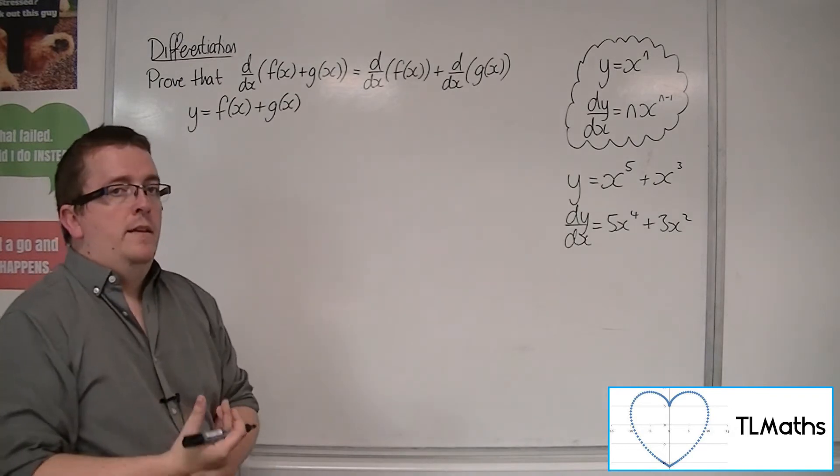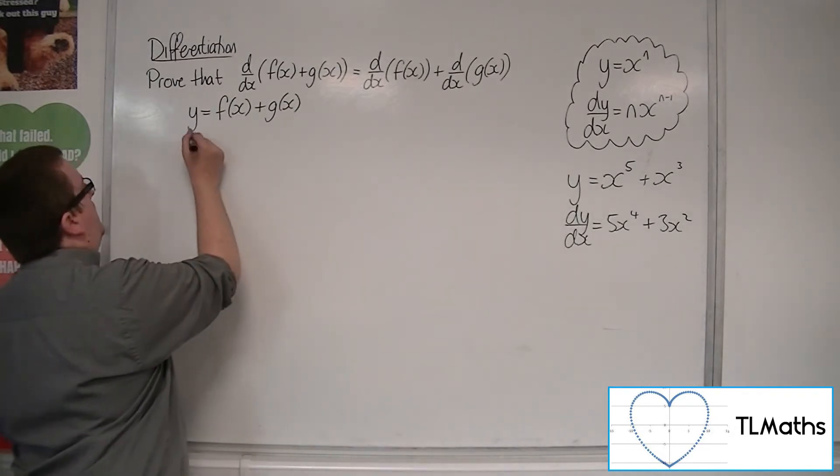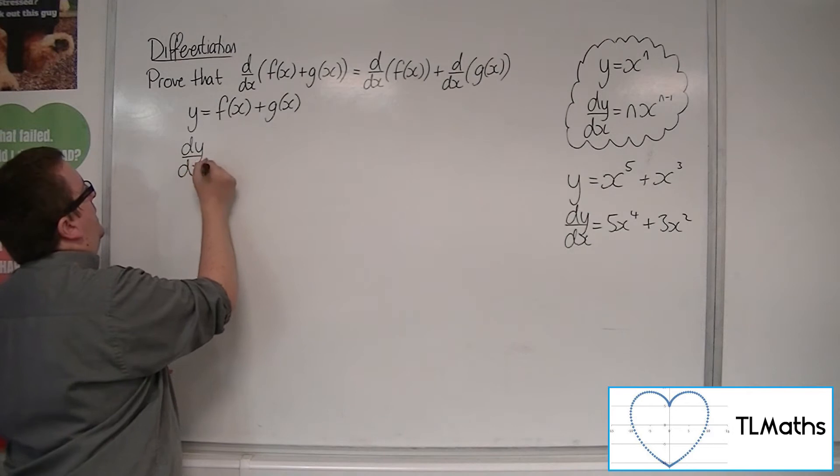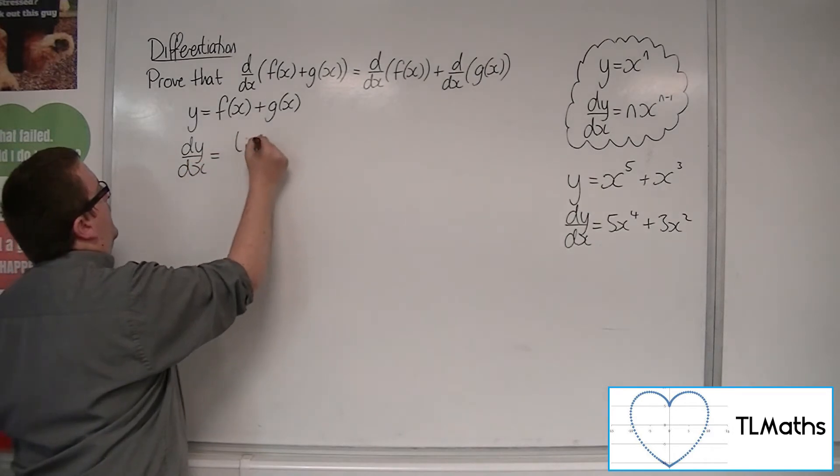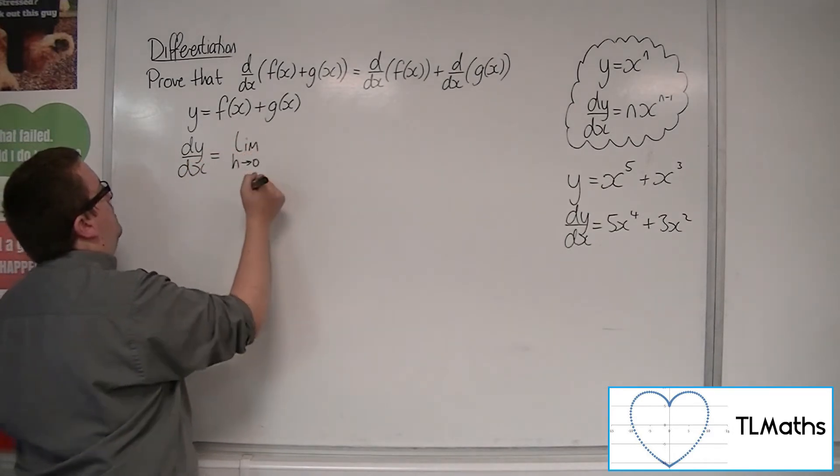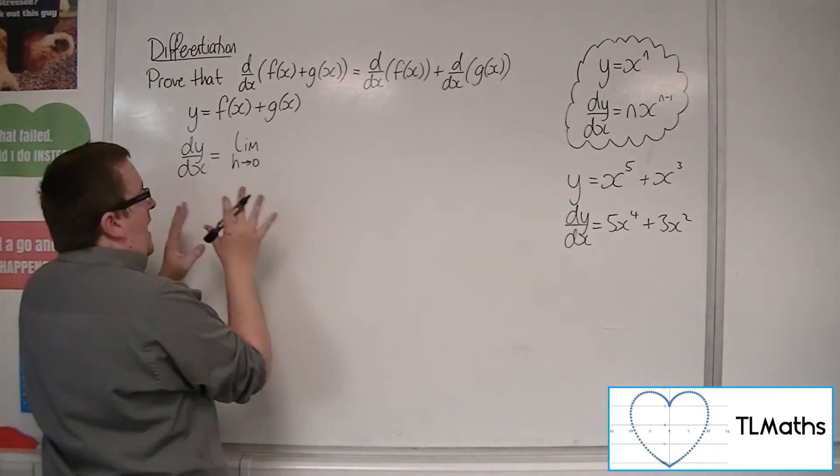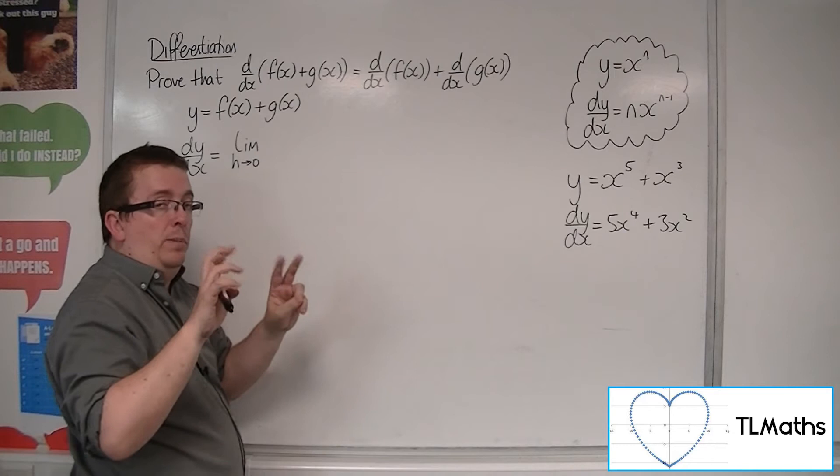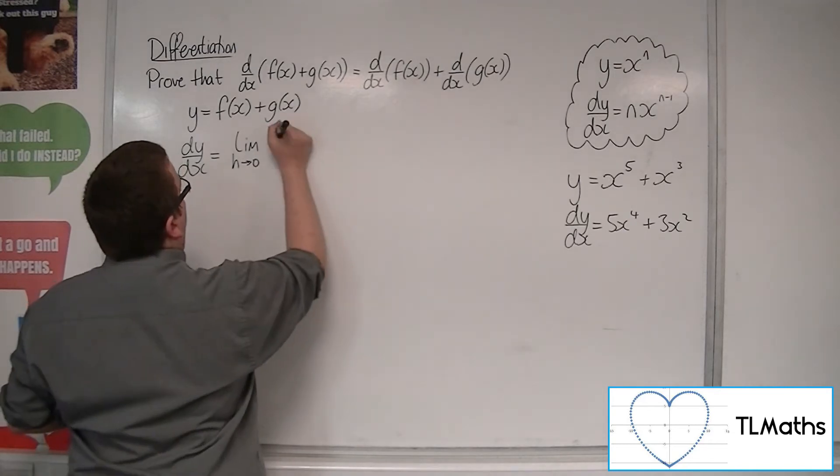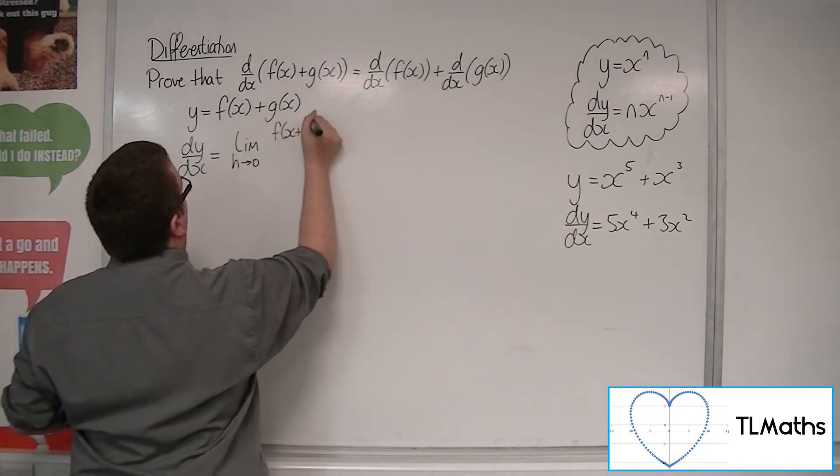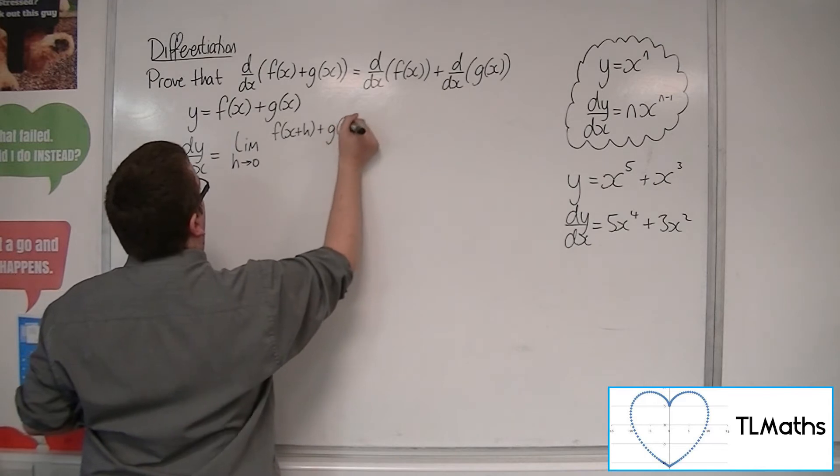Then dy by dx is equal to the limit as h tends to 0. So this is my function now. So I need effectively f of x plus h. So that's f of x plus h plus g of x plus h. That is my overall function.